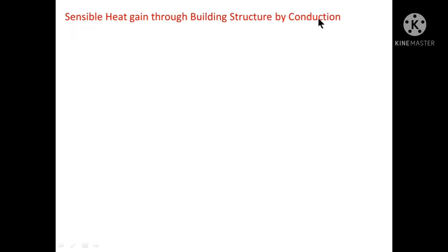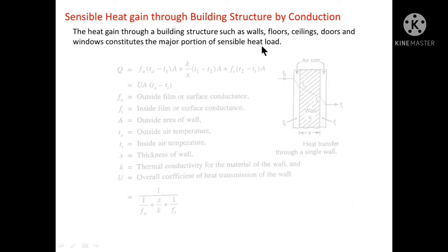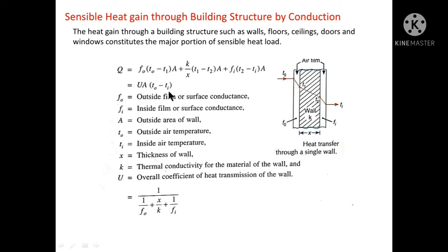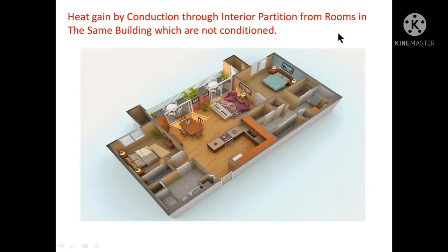Sensible heat gained through building structure by conduction: the heat gained through building structures such as walls, floors, ceilings, doors and windows constitutes the major portion of sensible heat load, which is given by Q = U·A·(To − Ti). This formula can be utilized for calculation of heat transfer through walls, floors, ceilings, doors, windows, etc. Next is the heat conducted through interior partitions from rooms in the same building which are not conditioned — heat can enter a space from other rooms in the same building.